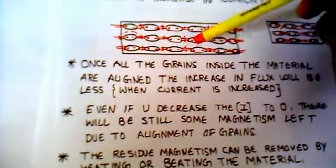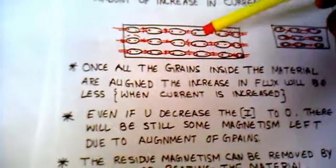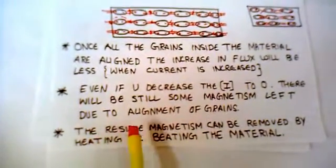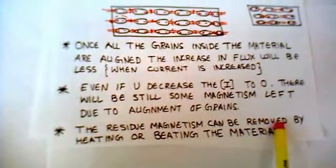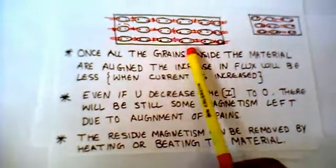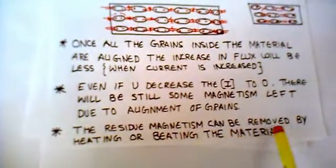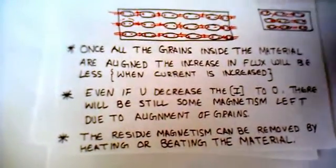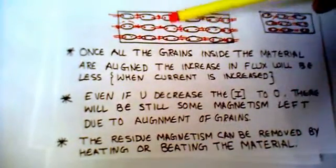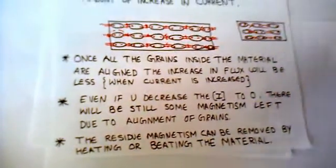Although this magnet would not be that strong, there is still magnetism. And this residue magnetism can be removed by heating the piece of material to a high temperature or beating the material with a hammer. That means you can remove this alignment and make the flux zero by heating or beating the material.